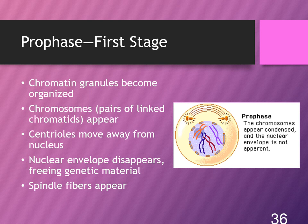Just before prophase begins, while still in interphase, the DNA will make an exact copy of itself — represented by X shapes joined in the middle by the centromere. Once prophase begins, the centrioles near the nucleus start to move to opposite poles of the cell and begin making spindle fibers or guide wires. The nuclear envelope — the membrane surrounding the nucleus — starts to disappear, freeing the genetic material inside.